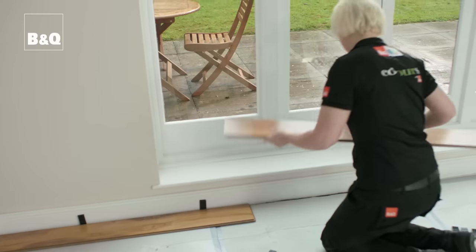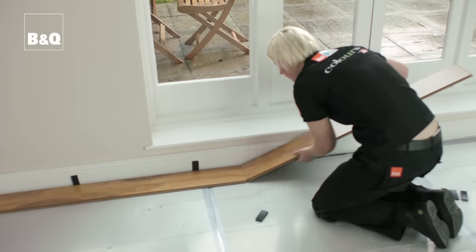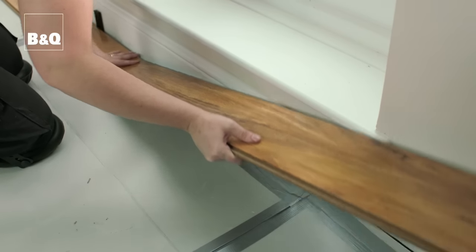Setting out is roughly laying out the floorboards to work out how they'll be arranged and to plan for obstacles like pipes. To start, set out the very first row to check you won't be left with a very short length at the end. If you are, just trim the very first board.